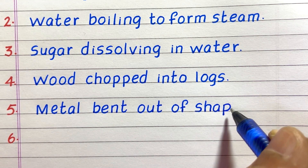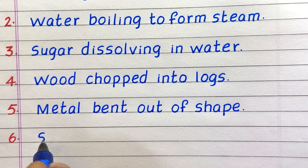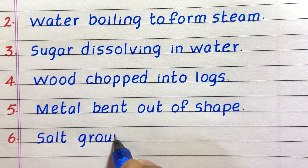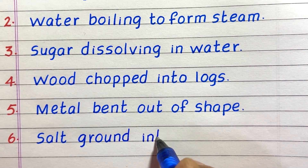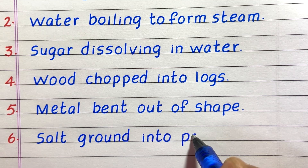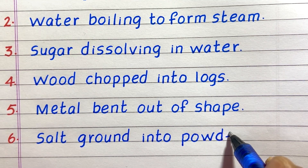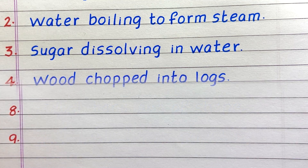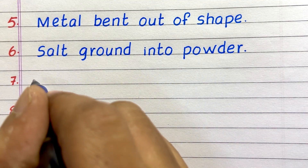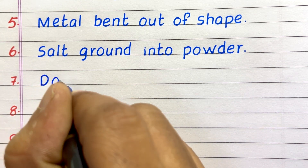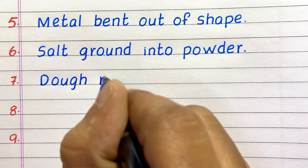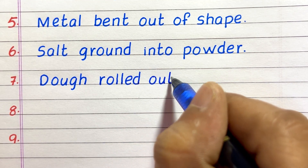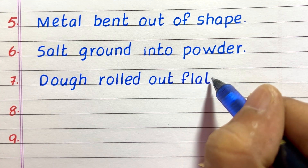Fifth, metal bent out of shape. Sixth, salt ground into powder. Seventh example of a physical change is dough rolled out flat.